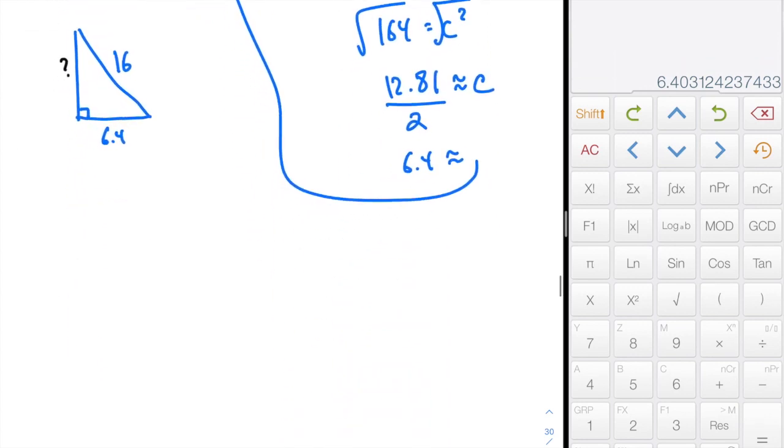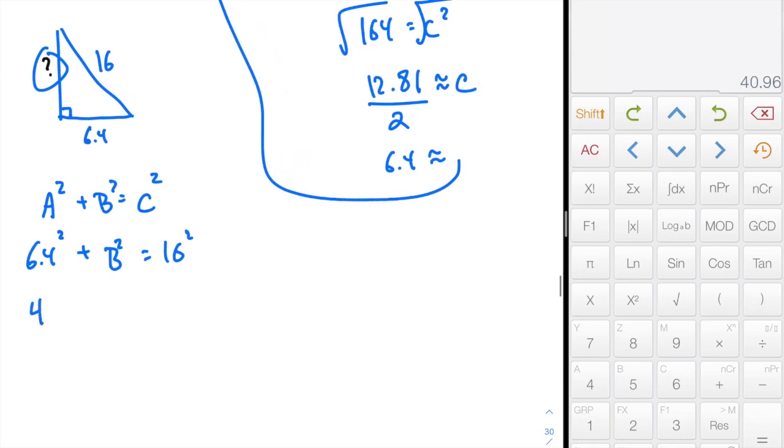So we have A squared plus B squared equals C squared. 6.4 squared plus B squared equals 16 squared. So to the calculator, 6.4 squared is 40.96. B squared, I don't know. C squared is 256. Subtract 40.96 from both sides.